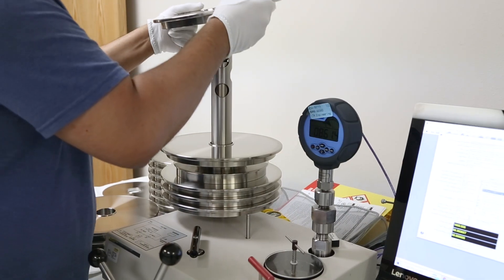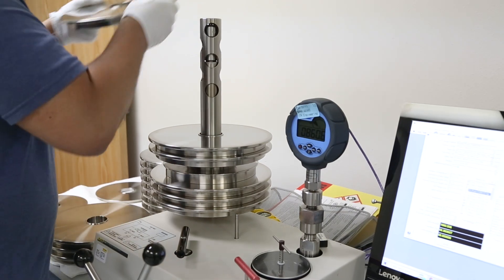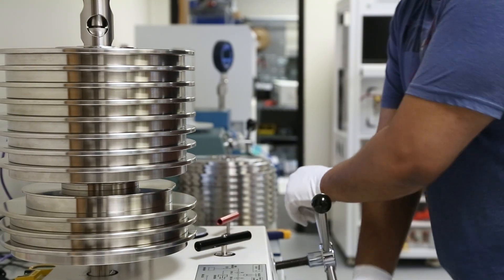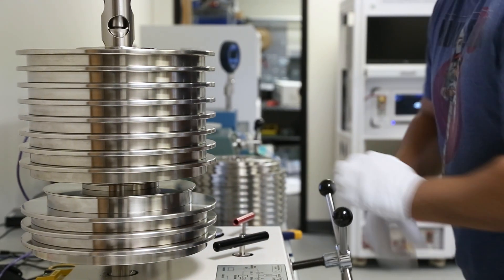If higher accuracy calibrations are needed, for example, to calibrate a reference gauge or module, deadweight testers should be used to ensure a high enough accuracy ratio is met.